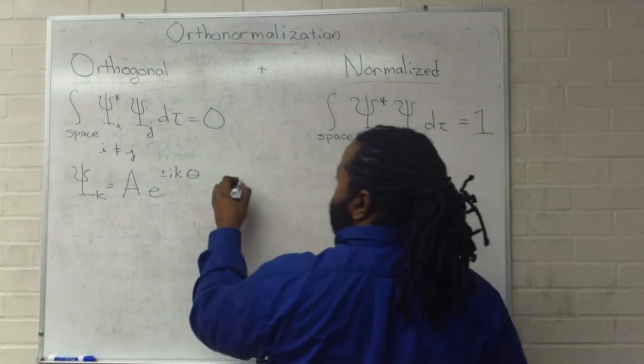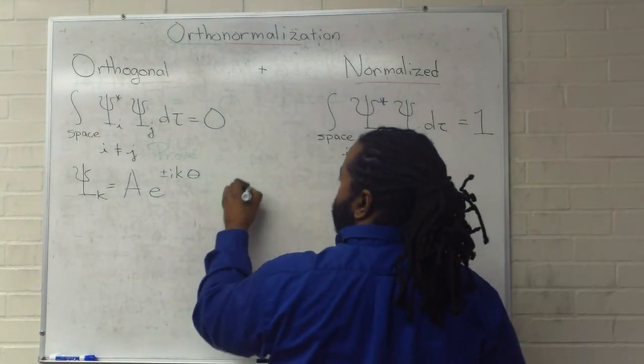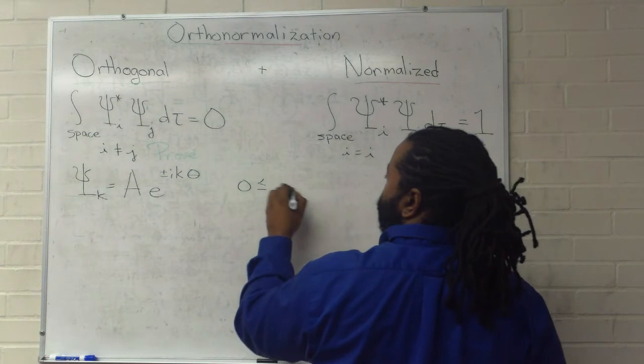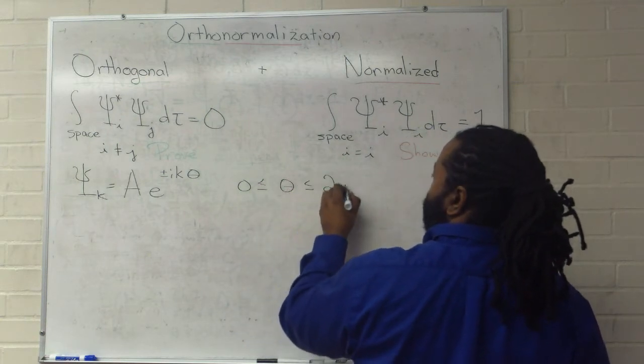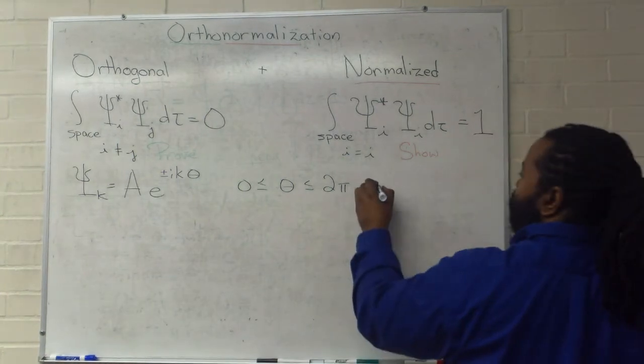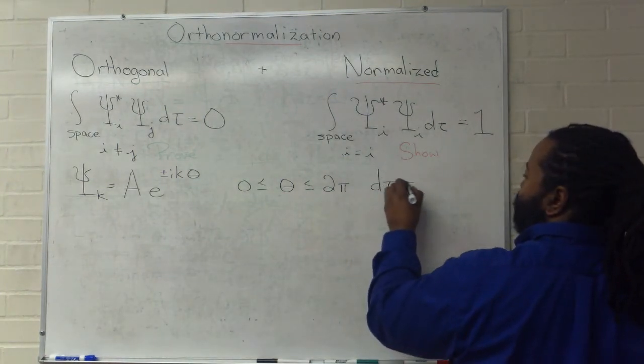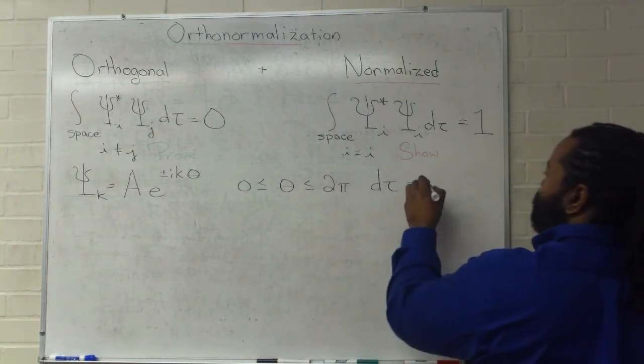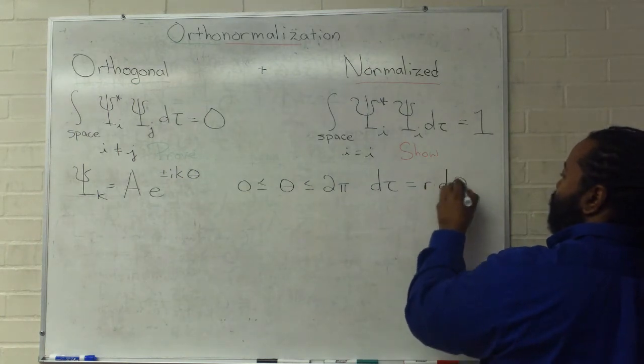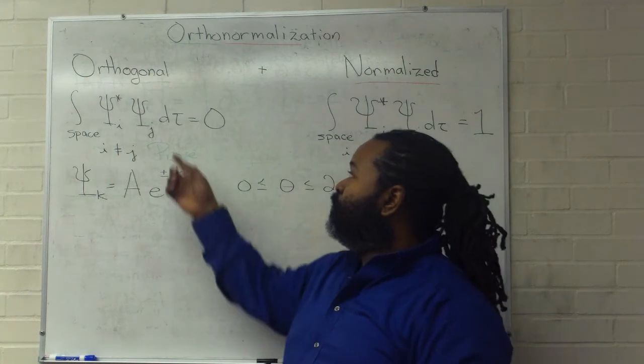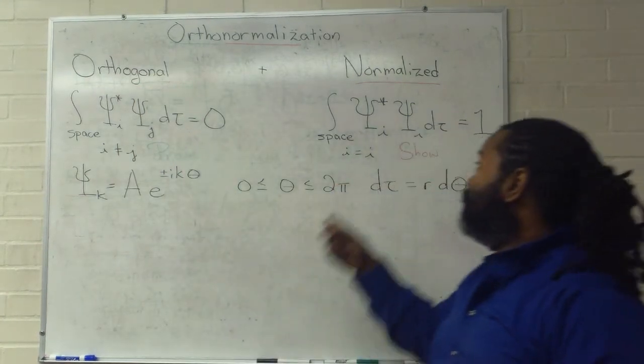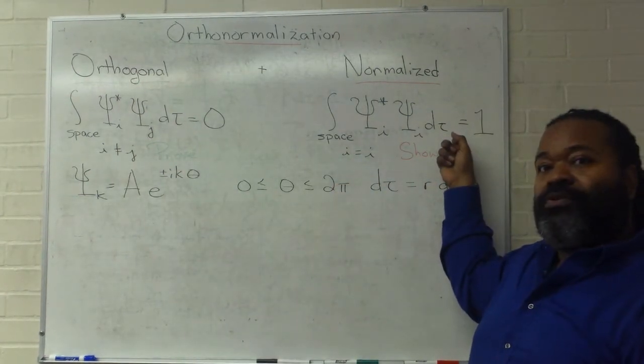And the thing that we have to keep track of is that all space then is defined as theta completing a full circle from 0 to 2 pi. And our differential for integration is r d theta. So, now we have everything we need in order to prove orthogonality and show normalization.